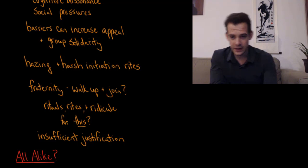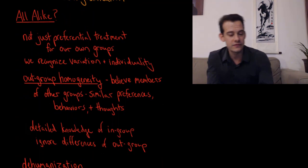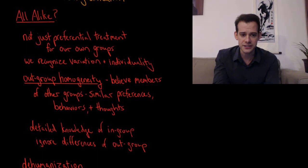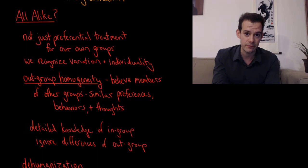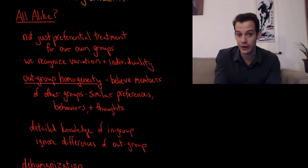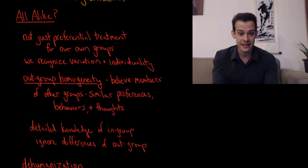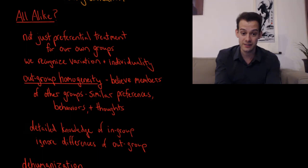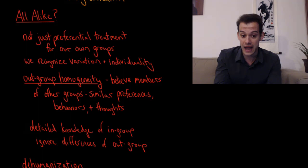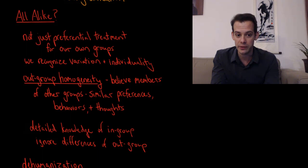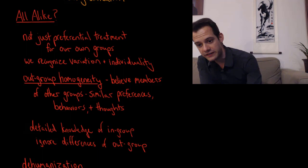We also have a tendency to think about members of outgroups as all being similar. It's not just that we have preferential treatment for in-group members — in-group bias — but we also recognize variation and individuality within our own group. When you think about students at your own school, you recognize they have different preferences, behaviors, and beliefs. But when thinking about students at another school, you might tend to think they're all more similar. This is known as outgroup homogeneity — the tendency to think that members of other groups have similar preferences, behaviors, and thoughts. Part of this is that we have detailed knowledge of our in-group but also tend to ignore differences we might actually observe in the outgroup.